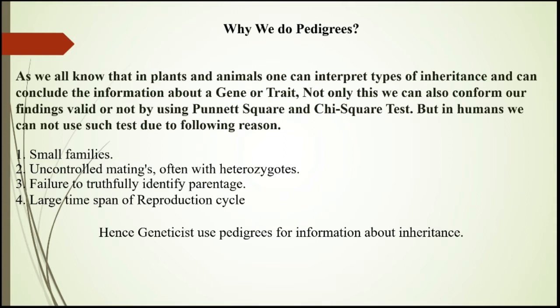In general we can produce only one child, meaning the number of offspring is very less, hence our family is small. The second limitation is uncontrolled mating — we cannot control mating between human beings as we can in plants, where we can cross tall plants with dwarf plants, yellow plants with red plants, or round seed with wrinkle seed. We cannot do it with humans, so we cannot get the ratio and we cannot prepare the Punnett square.